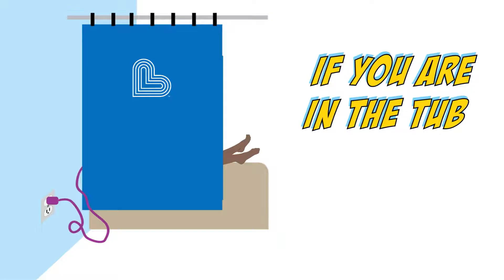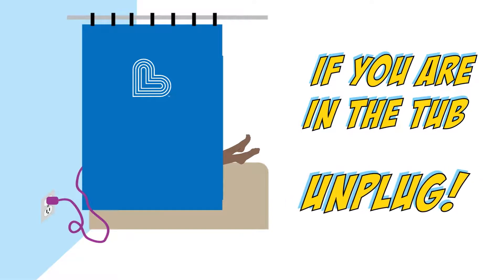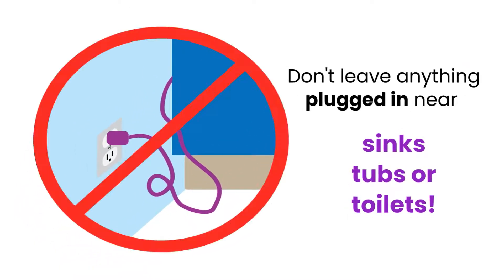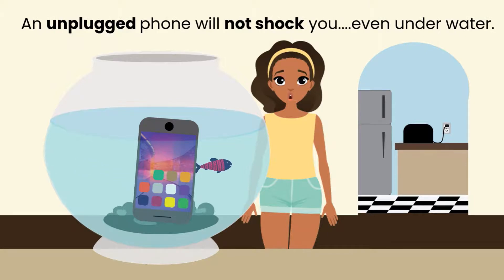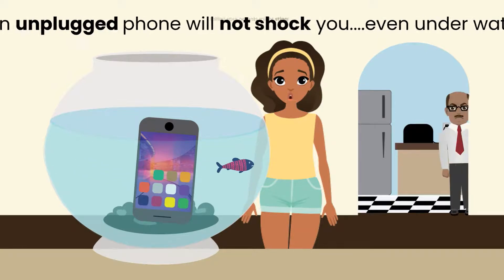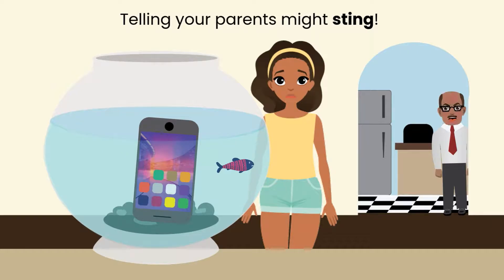If you must use your phone while taking a bath because you're killing it at your favorite video game or texting with your bestie, make 100% sure it is not plugged in and charging. If it is plugged in and falls in the water, it could kill you. An unplugged cell phone by itself will not shock you if it takes the accidental plunge. But if it's not waterproof, it may cause you pain later when you have to tell your parents.